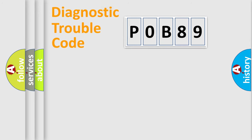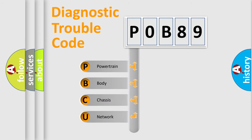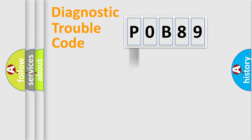First, let's look at the history of diagnostic fault code composition according to the OBD2 protocol, which is unified for all automakers since 2000. We divide the electric system of the automobile into four basic units: Powertrain, Body, Chassis, and Network. This distribution is defined in the first character of the code.